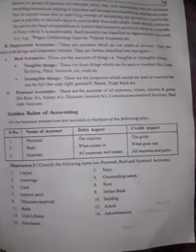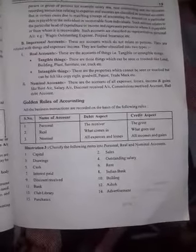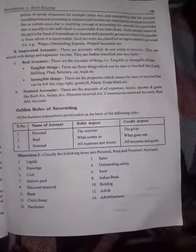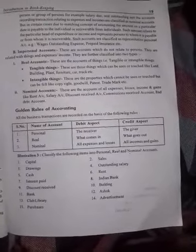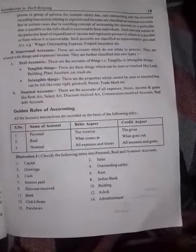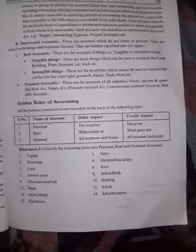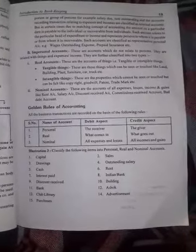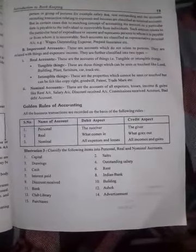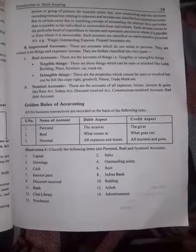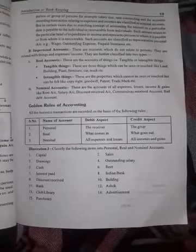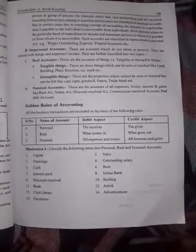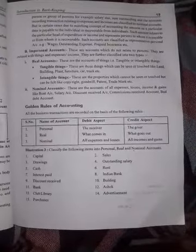The next point is impersonal account, which includes real accounts. Real accounts are of two types: tangible and intangible. Tangible assets can be seen and touched, like land, building, plant, and machinery. Intangible assets cannot be physically touched, like patents, copyright, and goodwill. All these are intangible assets.